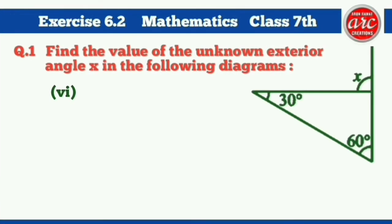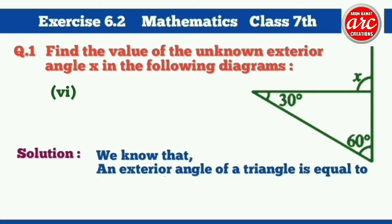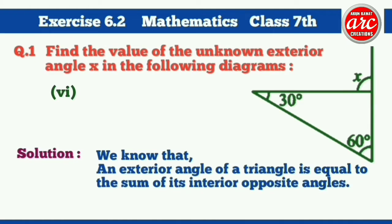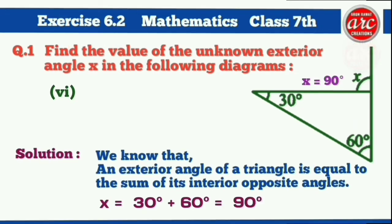Solution of part 6: As we know, an exterior angle of a triangle is equal to the sum of its interior opposite angles. X is equal to 30 degrees plus 60 degrees, which is equal to 90 degrees. Hence, angle X is equal to 90 degrees.